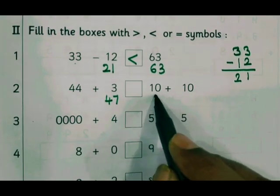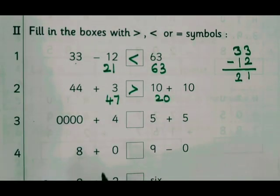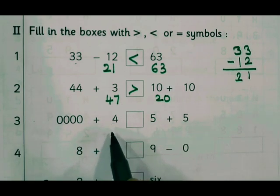10 plus 10 is 20. 47 is greater than 20. Any number of zeros plus 4 will be the same.